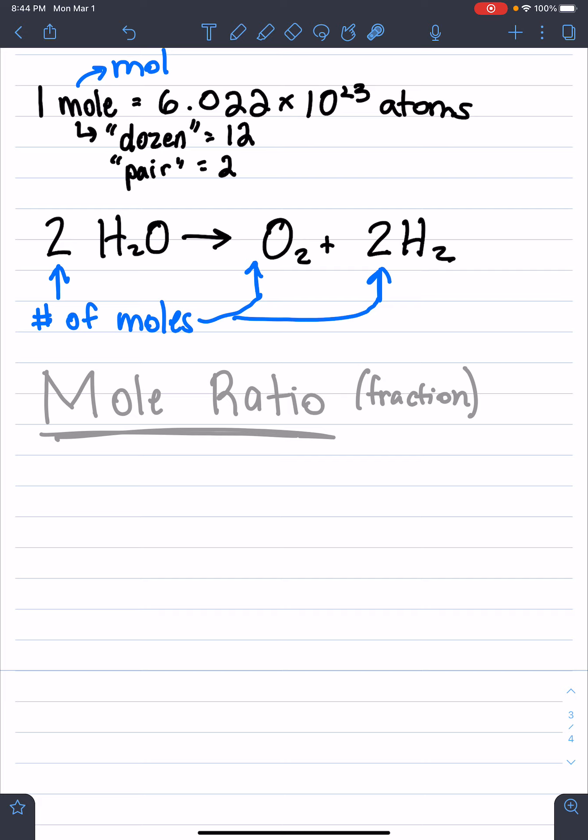So again, we're going to be using this equation up here. Look at that equation, that's what we're going to be using. And so we're going to make a fraction or a ratio that's going to compare H2O and O2. So I want to get a ratio or a fraction that compares H2O and O2.